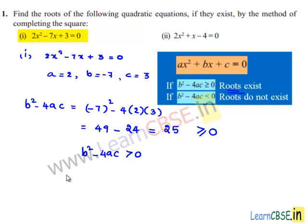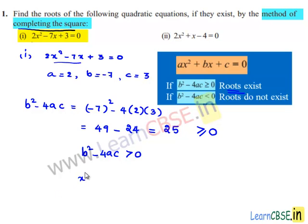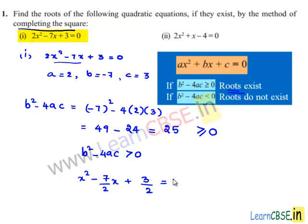Let us find those roots by the method of completing the square. Dividing the given equation by 2, we get x² minus (7/2)x plus 3/2 is equal to 0.